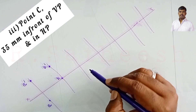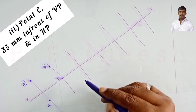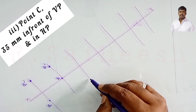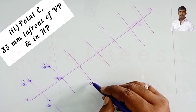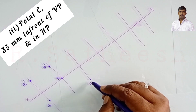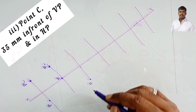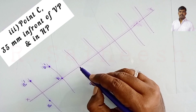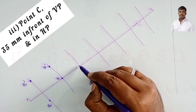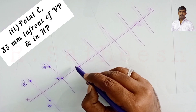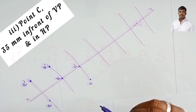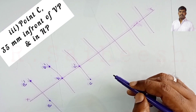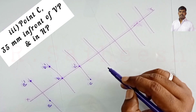Point C is 35 mm in front of VP and in HP. In front of VP means below XY — so the top view is 35 mm below XY. Since C is in HP, the front view lies completely on XY.